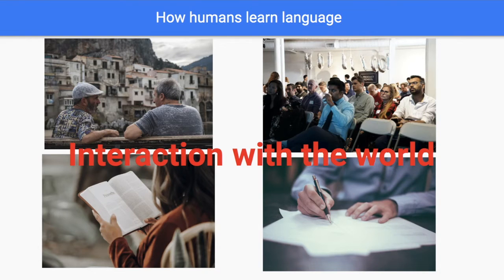The most important part is interaction with the world. For example, imagine when you were a kid and you asked your parents for candy and you said the word candy. If you said it right, they gave you a candy, which is a good reward. Then in the future you know how to say candy better. When you see the image of candy, the object of candy, you will say that's candy. And if you say it wrong — maybe you say it's computer — then your parents will tell you that's not a computer, that's a candy, giving you a learning signal. So it's interaction with the world — that's the most important thing.